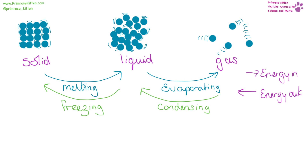Going from a solid to a liquid is melting. From a liquid to a gas is evaporating. Going in this direction, we are putting energy in. Going in the other direction, energy is coming out. So from gas to a liquid is condensing, and from a liquid to a solid we are freezing.